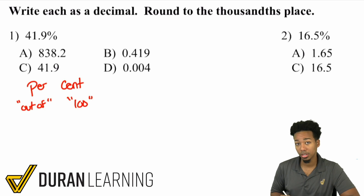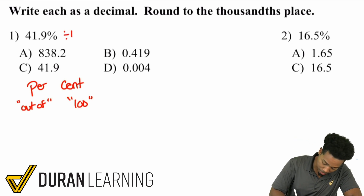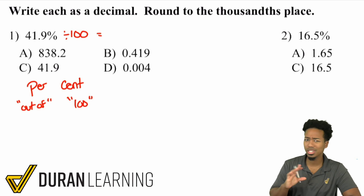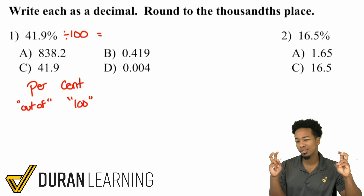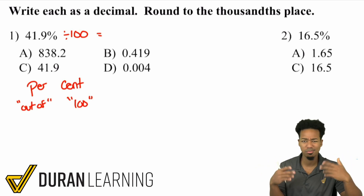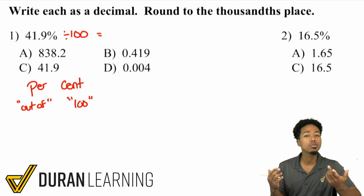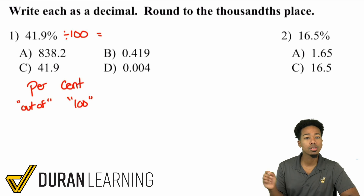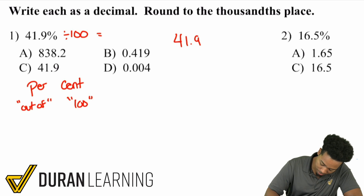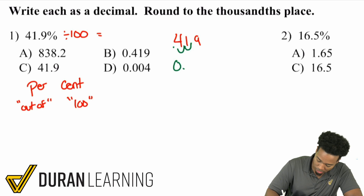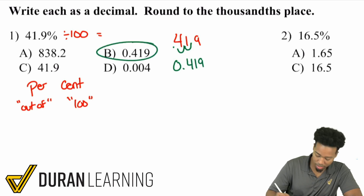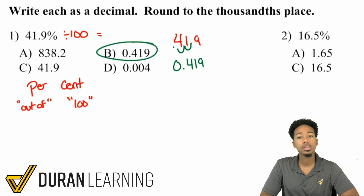And there's a shortcut to dividing by 100. When you're dividing by powers of 10 — like 10, 100, 1000, 10,000 — you're just going to move the decimal place to the left two times. That's it. When you divide by 100, move it to the left two times. So when you have 41.9, you take that decimal place and move it once, twice to the left, and you get 0.419. There's your answer. It is really that straightforward.